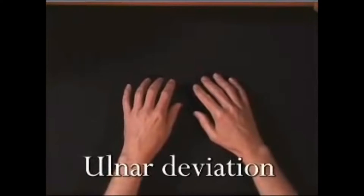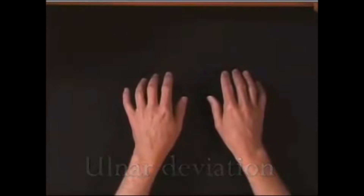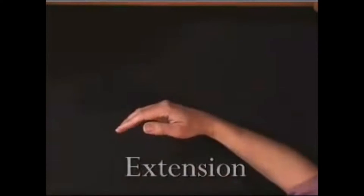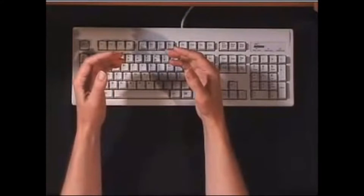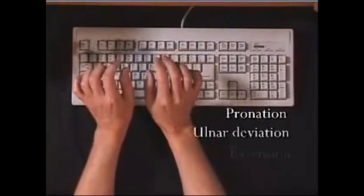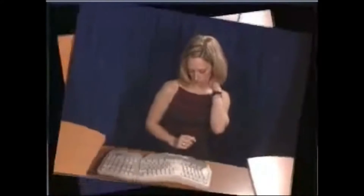The second position is called ulnar deviation, and that involves twisting the wrist like so. The third position is called extension, which is bending the wrist. When a person types on a conventional keyboard, all three positions are assumed at the same time: pronation, ulnar deviation, and extension of the wrist. Many so-called ergonomic keyboard designs actually just move the problem from one area of the body to another. You'll observe that when going from a conventional flat keyboard to a new split ergonomic design, the elbows have to be held out away from the body, resulting in stress in the neck and shoulders. There's only one keyboard that can't be adjusted improperly and automatically places the user in the correct position — and that's the SafeType.